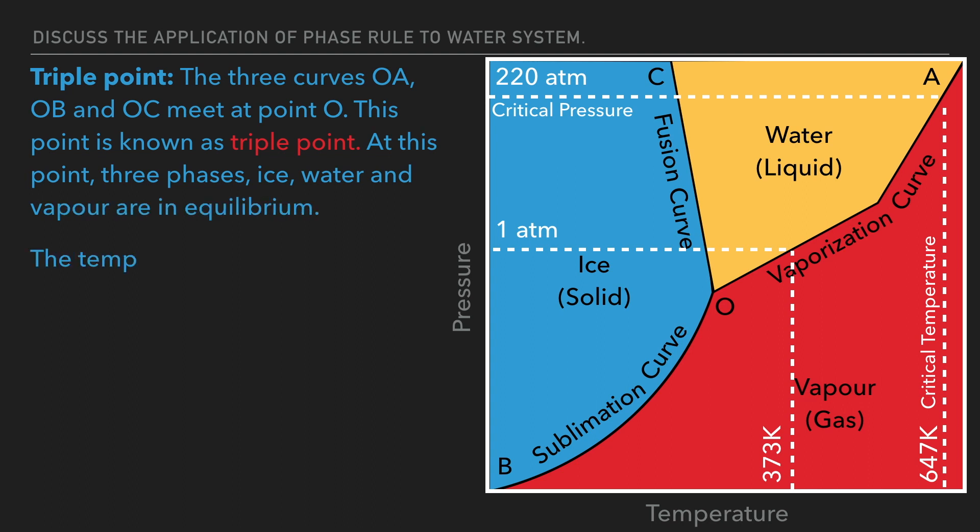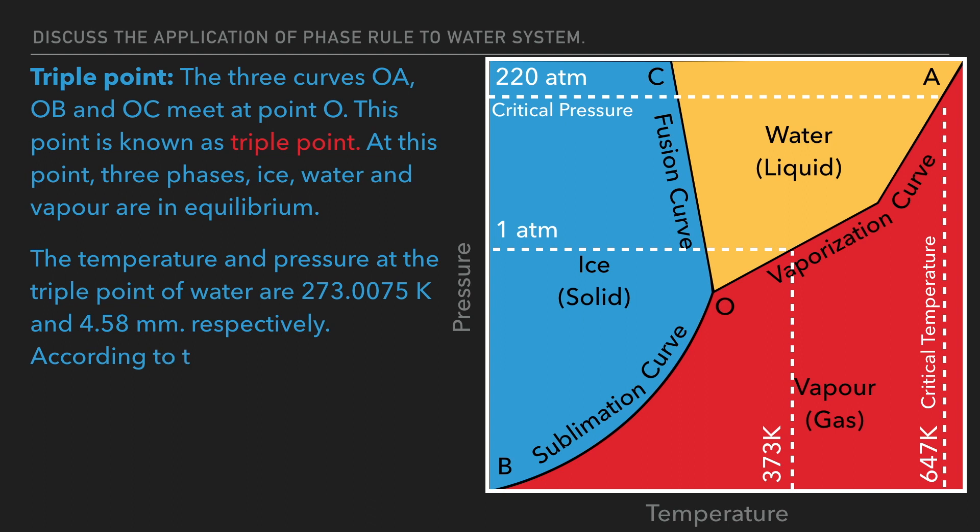The temperature and pressure at the triple point of water are 273.0075 Kelvin and 4.58 millimeter respectively. According to the phase rule at triple point, number of phases P equals 3 and component C equals 1. Therefore F equals C minus P plus 2, equals 1 minus 3 plus 2, which equals 0.